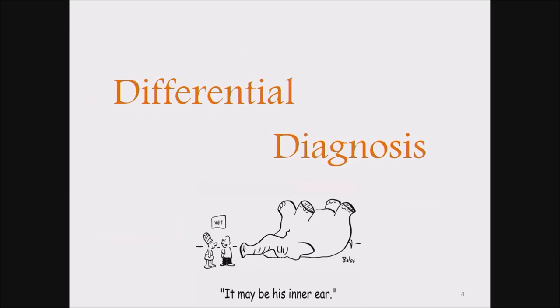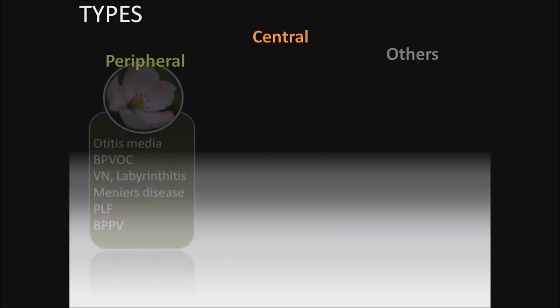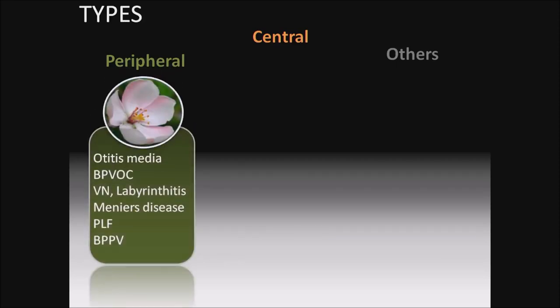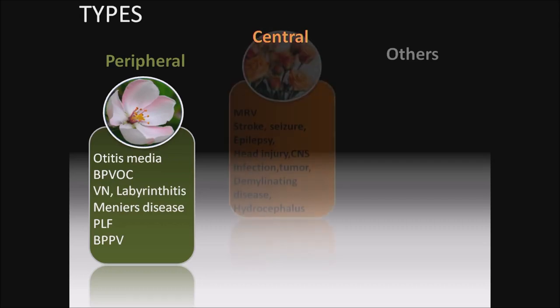Differential diagnosis: three types — peripheral, central, and others. Peripheral types most commonly seen are otitis media, BPVOC (benign paroxysmal vertigo of childhood), vestibular neuronitis, labyrinthitis, Meniere's disease, perilymphatic fistula, and BPPV.